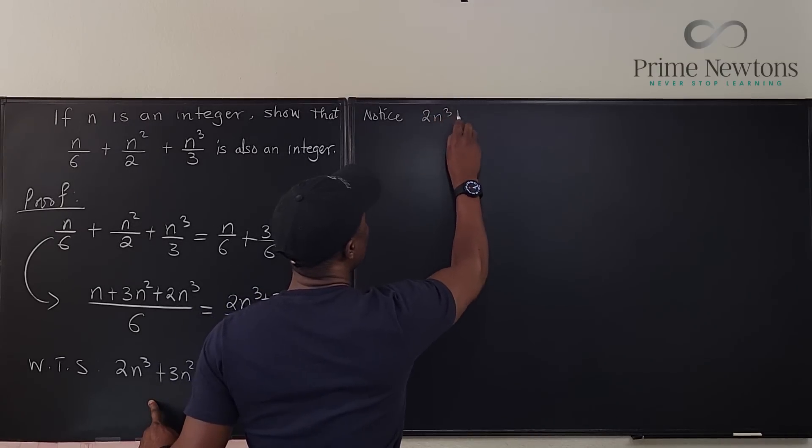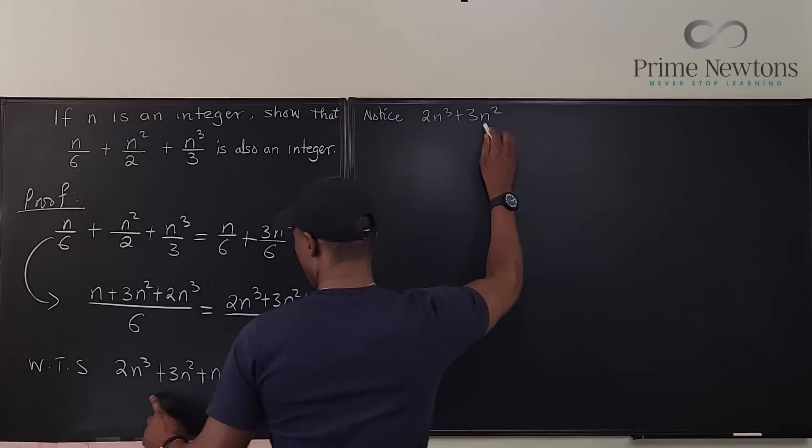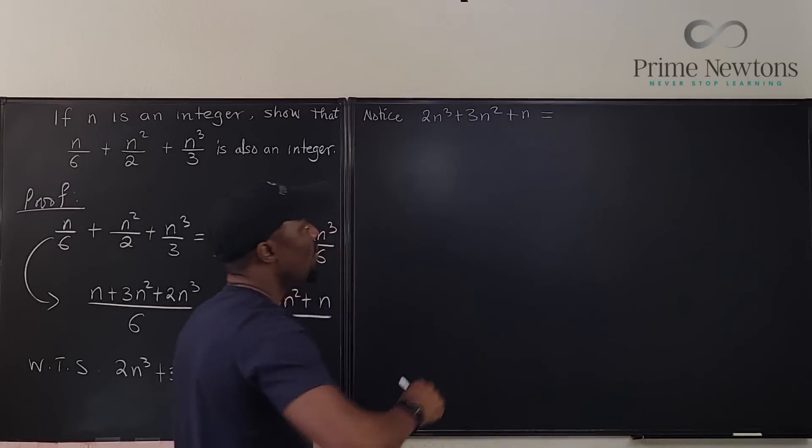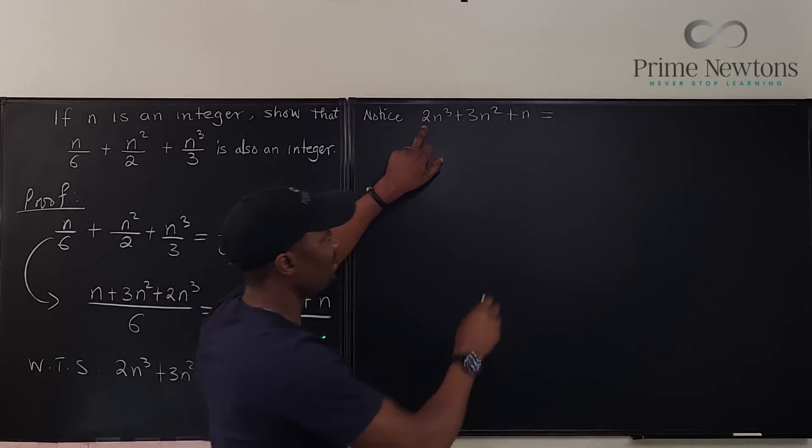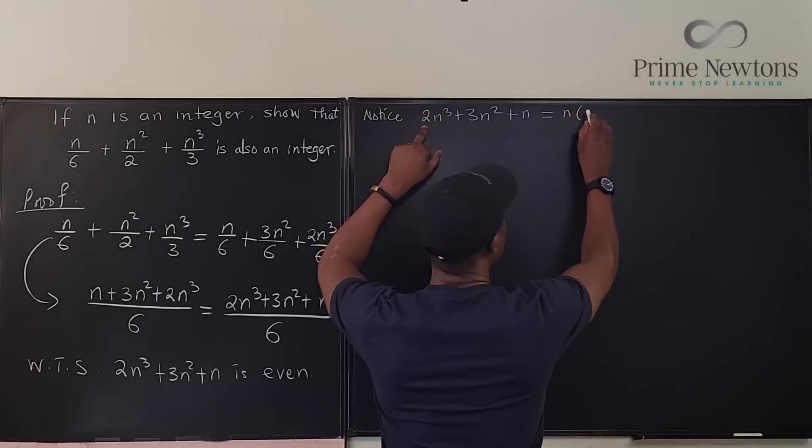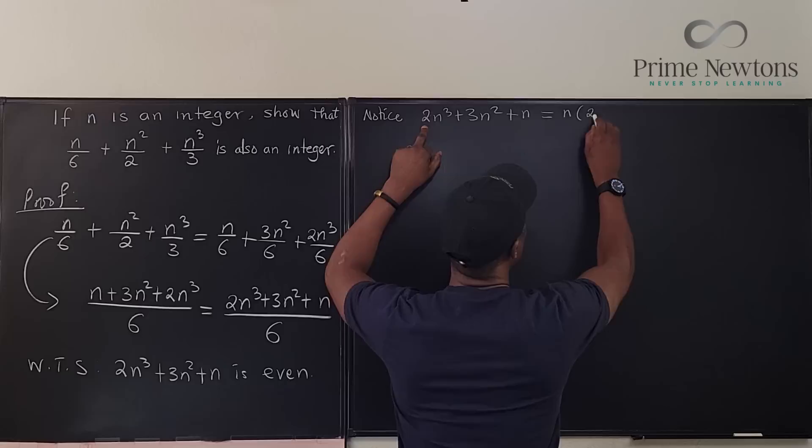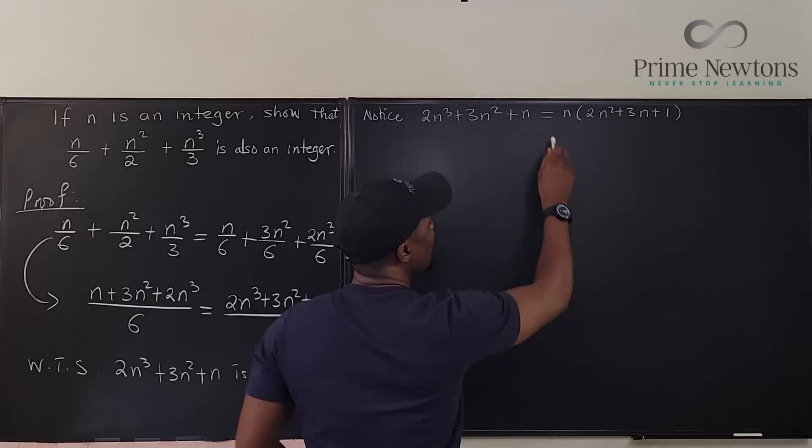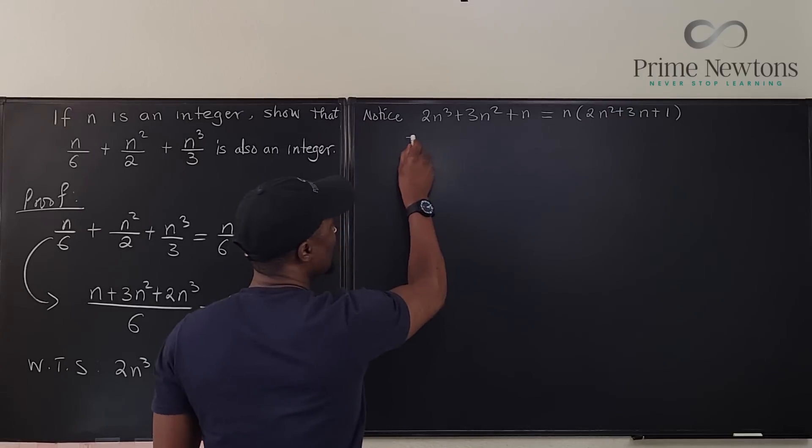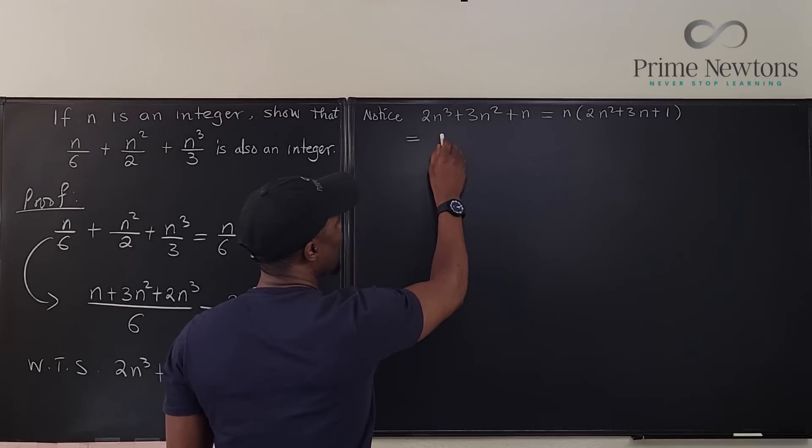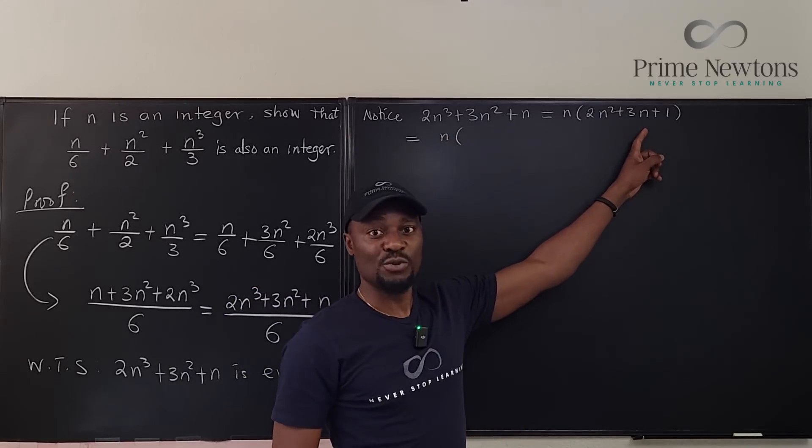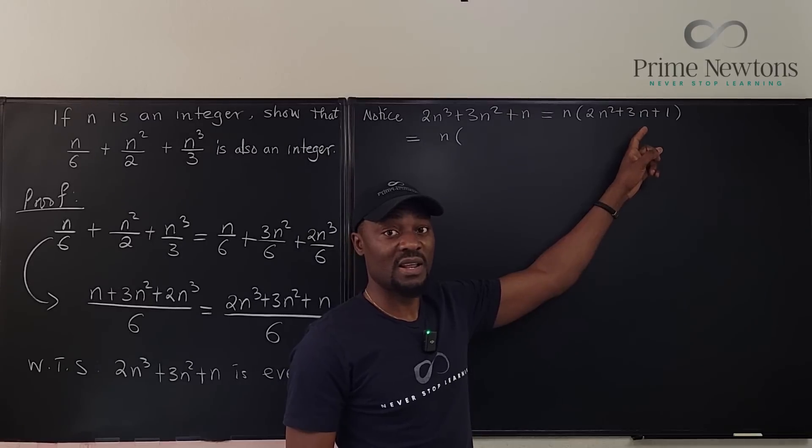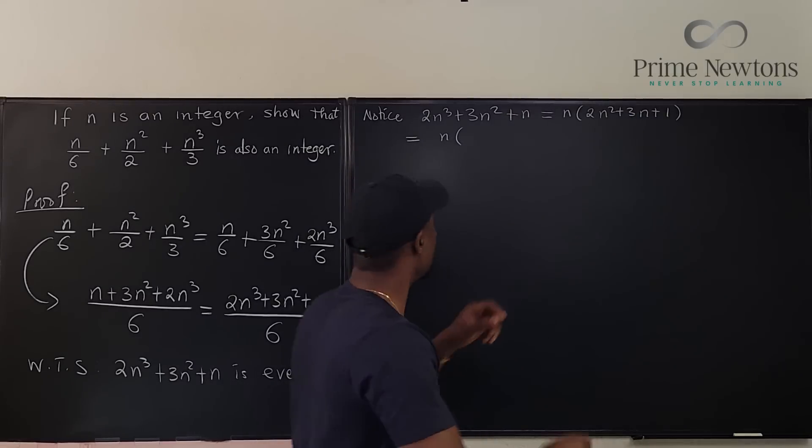2n cubed plus 3n squared plus n equals, if I factor out n, n times 2n squared plus 3n plus 1. This can be factored into n times (n plus 1) times (2n plus 1).